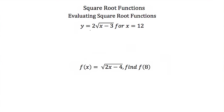Now let's talk about evaluating square root functions. This is just plugging in numbers for our variable and seeing what the function is equal to. Here we have y is equal to 2 times the square root of x minus 3, and we want to evaluate this for when x is equal to 12. We do this the same way we would do any other function — we just plug in 12 for x. This gives us y is equal to 2 times the square root of 12 minus 3.